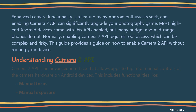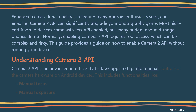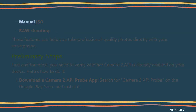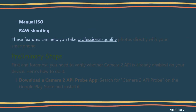Understanding Camera 2 API. Camera 2 API is an advanced interface that allows apps to tap into manual controls of the camera hardware on Android devices. This includes functionalities like Manual Focus, Manual Exposure, Manual ISO, and Raw Shooting. These features can help you take professional quality photos directly with your smartphone.